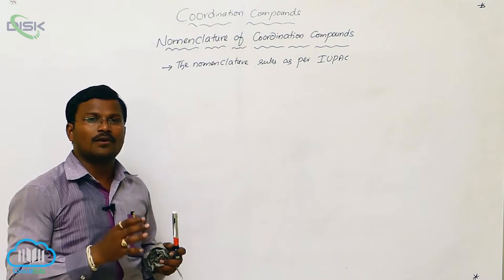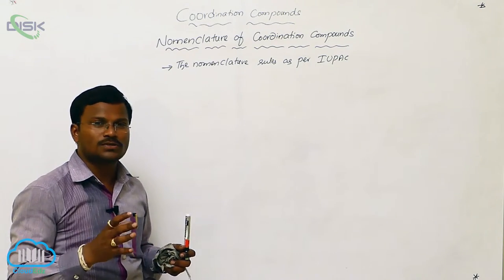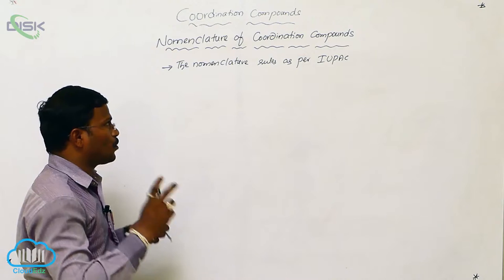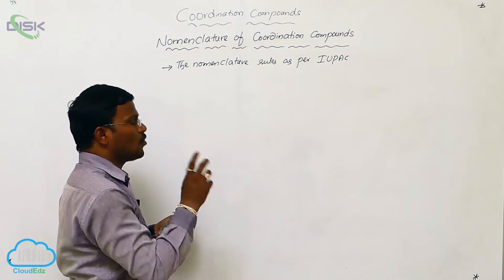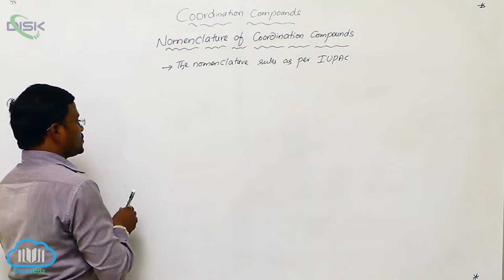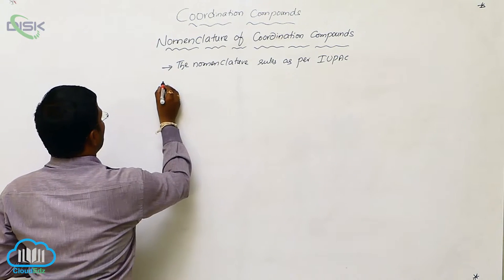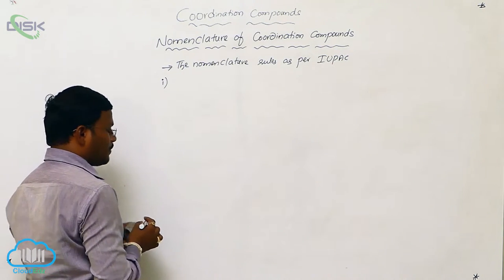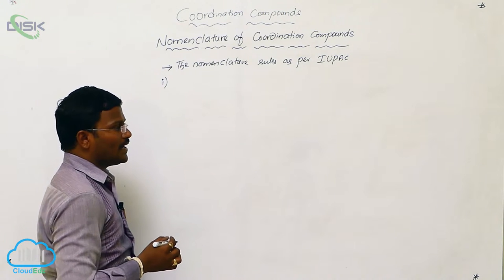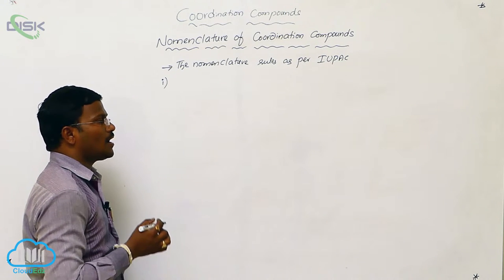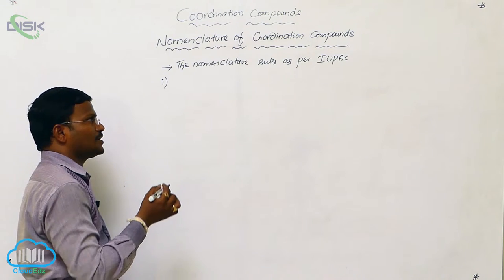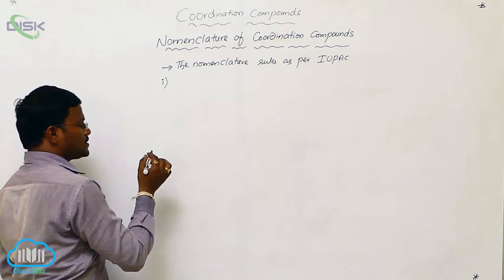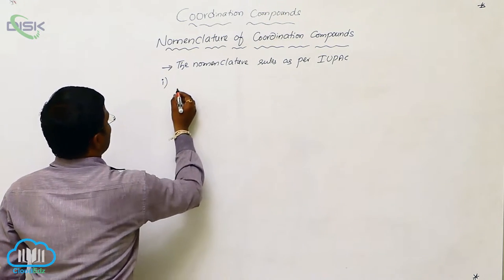Let us follow some characteristics or rules to provide names for coordination compounds. What are the rules we have to follow to produce names for coordination complexes? To provide nomenclature or names for given coordination compounds, we have to follow some rules.